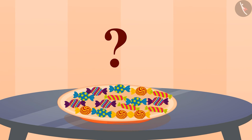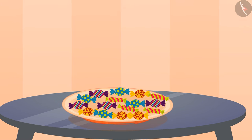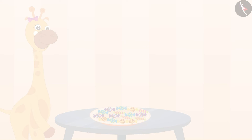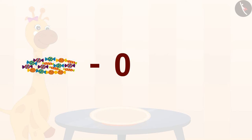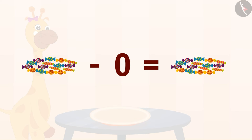Children, can you tell how many chocolates are on the table now? You thought it right — 16. Gaffee didn't eat any chocolate, which means she ate zero chocolates. And when we subtract zero from any number, the answer is equal to the number subtracted.